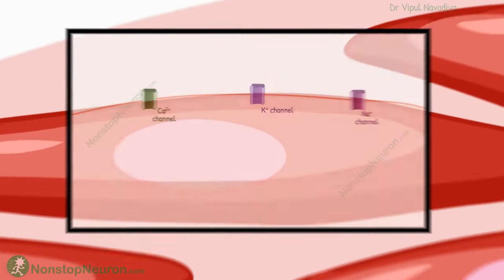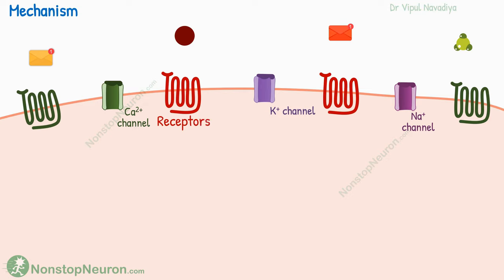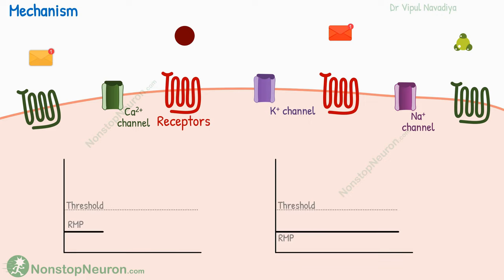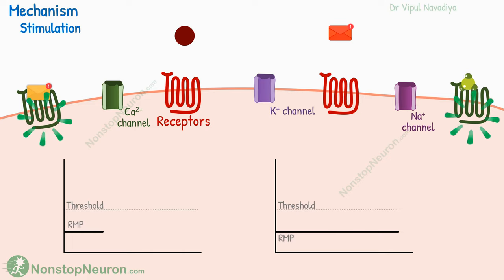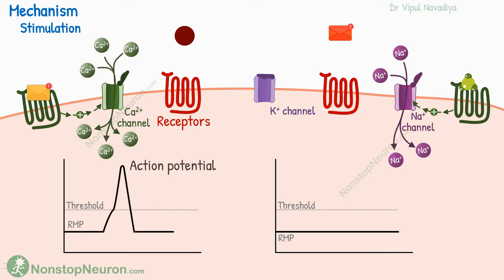Now let's zoom in and see the mechanism by which all these factors exert their effect. It starts with the stimulation of their respective receptor. The exact receptor and mechanism varies from factor to factor. One mechanism is changing the membrane potential of the cells. For stimulation, to increase contractions, those receptors are activated that eventually cause the opening of calcium or sodium channels. The entry of positive ions results in the generation of action potentials, which causes muscle contraction directly.